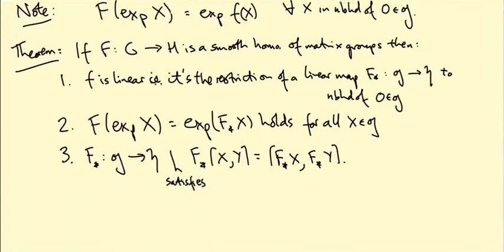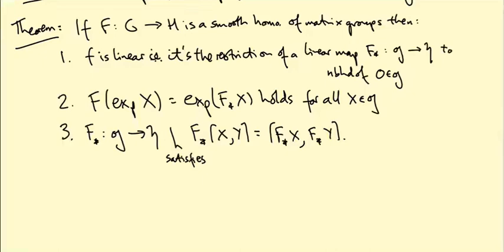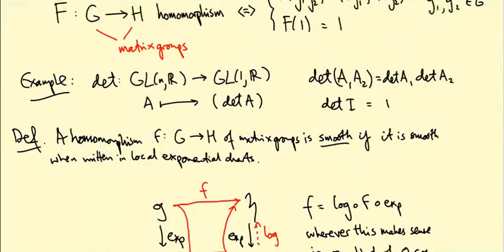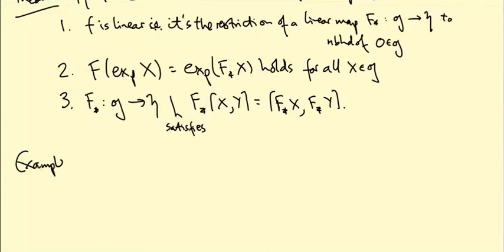To illustrate the awesomeness of this theorem, I want to explain what it means for the determinant example we mentioned. What it's saying is there is a linear map,